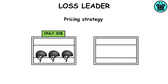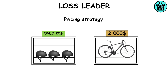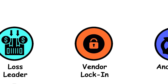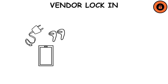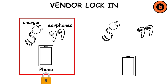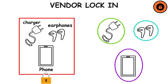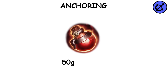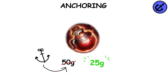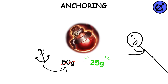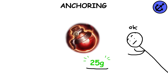Vendor lock-in: Dependency on a vendor, making it challenging to switch to another without significant costs. Anchoring: When shown what a product or service costs before the promotion alongside the sale price, the initial price acts as an anchor. Clients that look at both prices will consider the new, cheaper price a better deal than they would have if only the sale price were visible.